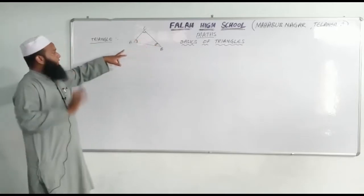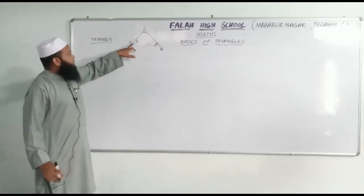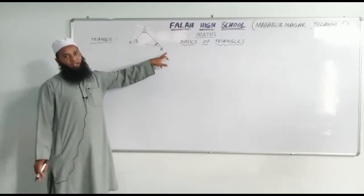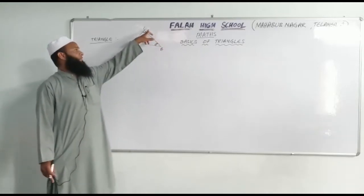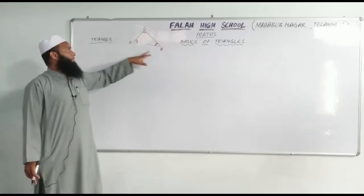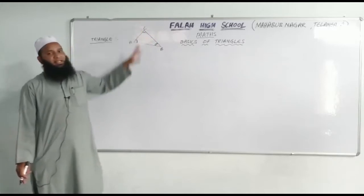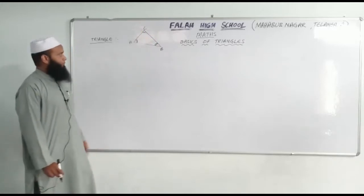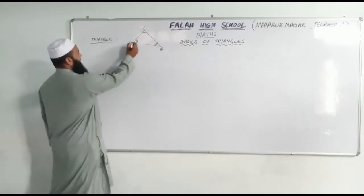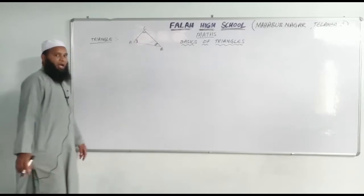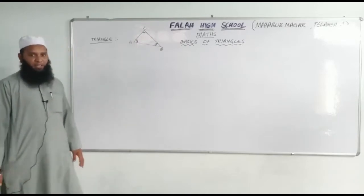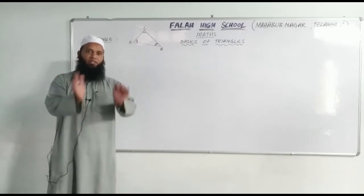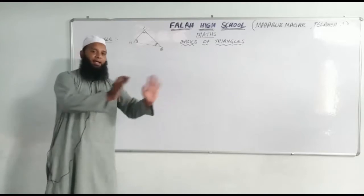Here A is called as a vertex, B is called as a vertex, and C is another vertex. These three vertices form a triangle.